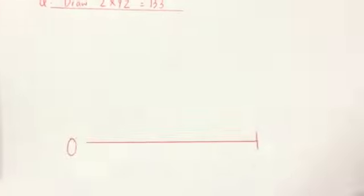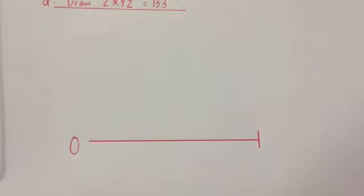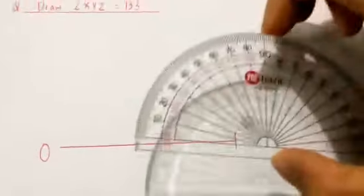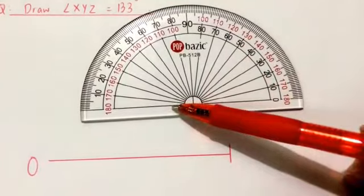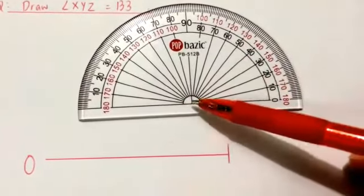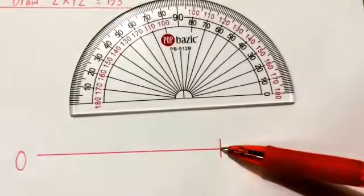What I do next is to put my protractor on this line. Remember that this black line needs to be on this red line and this point needs to be at this point.